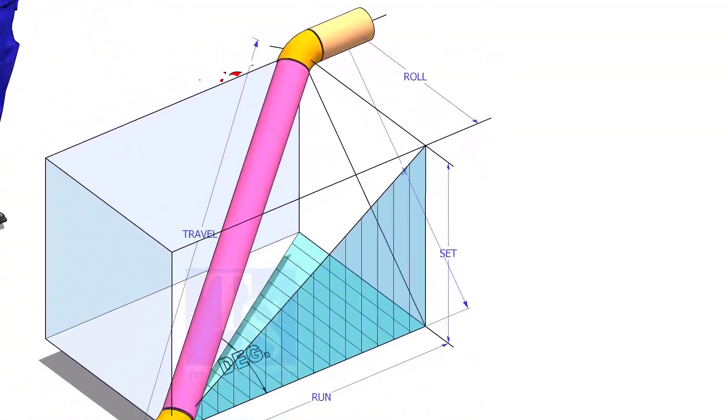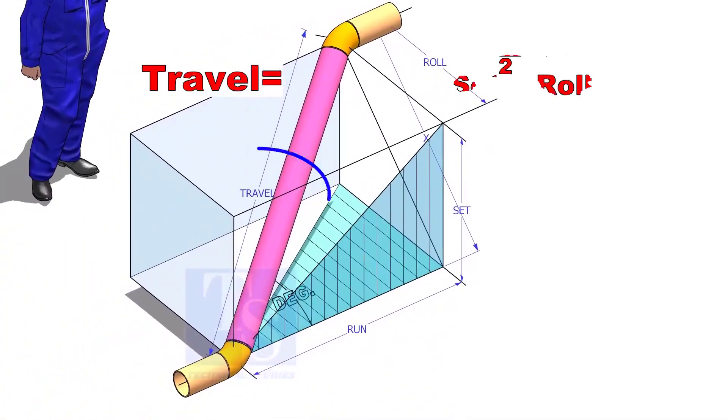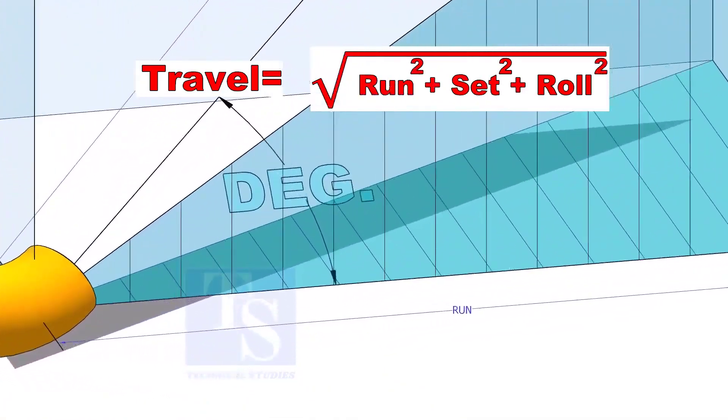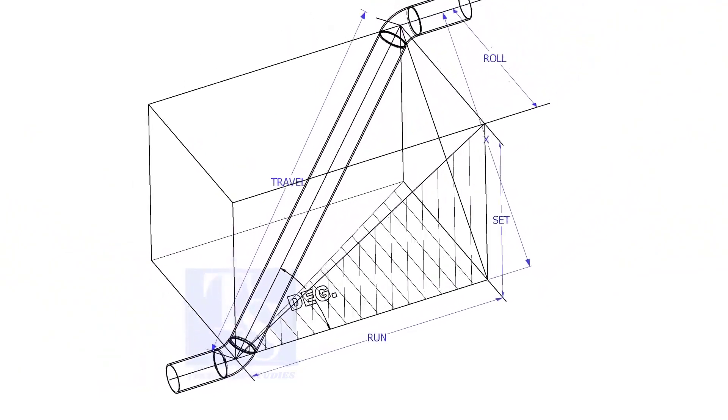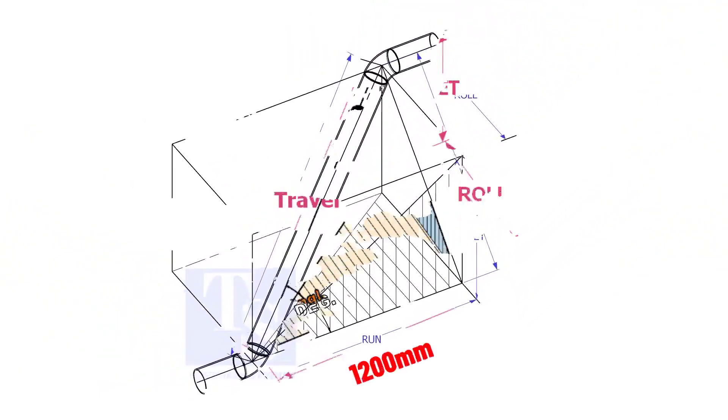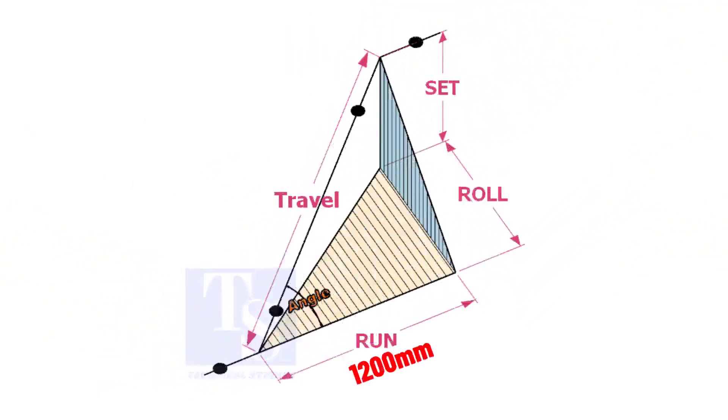The formula to calculate the travel length is root of the sum of the run, set and roll. Assume that the run is 1200 mm, set is 1000 mm and the roll is 800 mm.